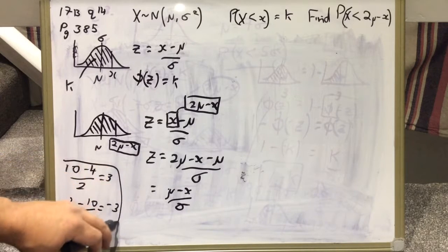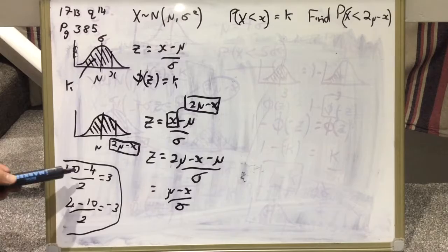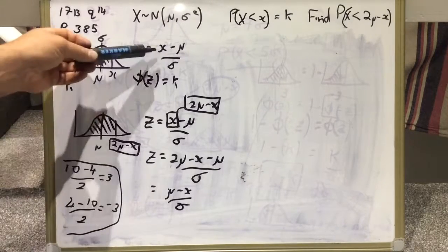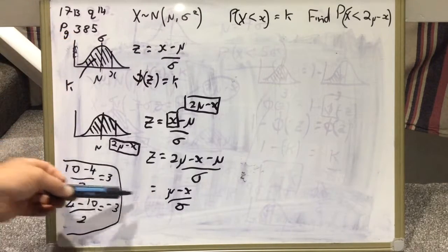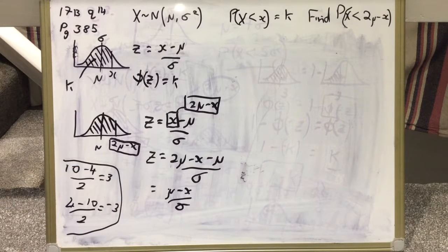These numbers just came from my head to show us what was going on here. If this was the answer to that, let's say it was 3, the answer to this would be negative 3. We've got the same value, but one is negative and one is positive, and that's the key to what's going on here.